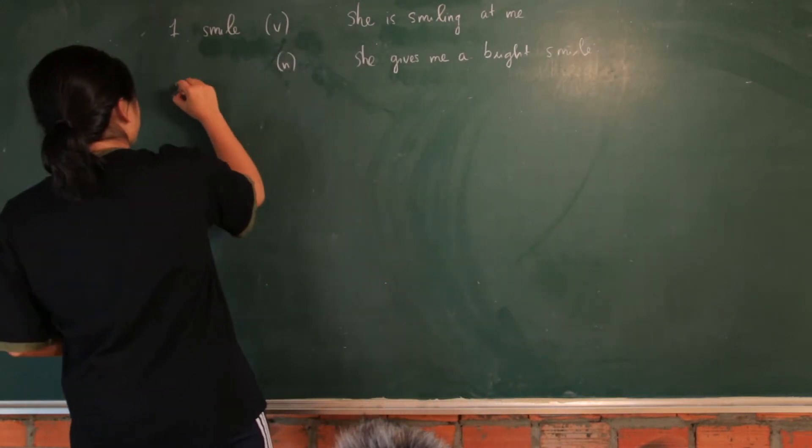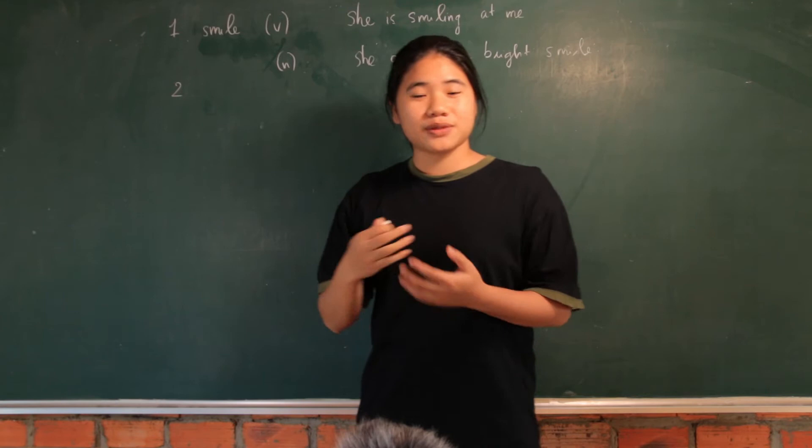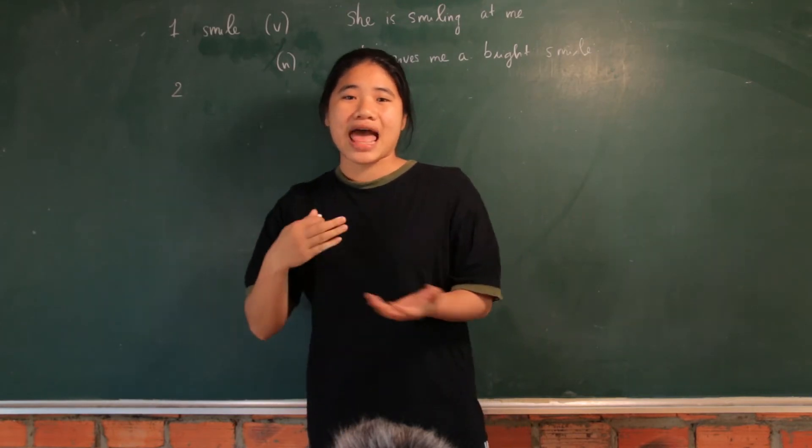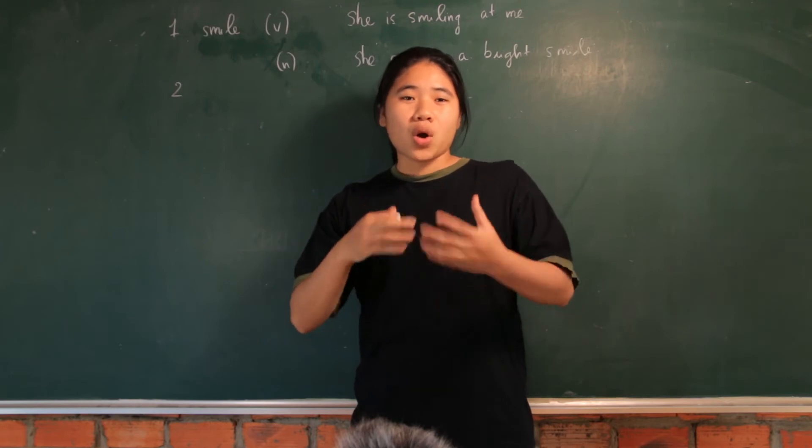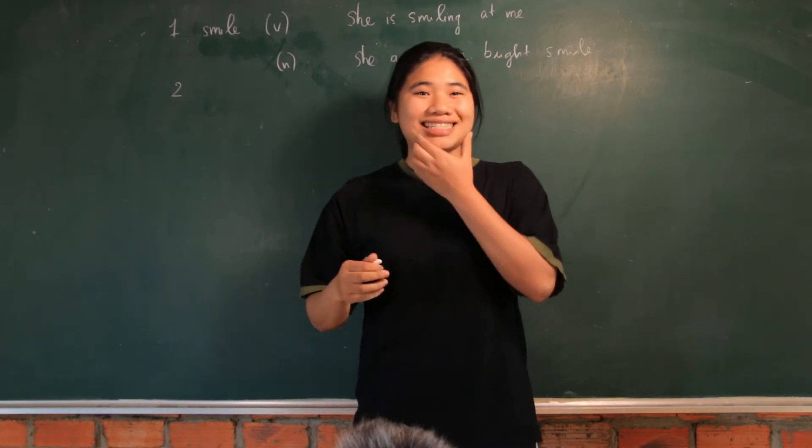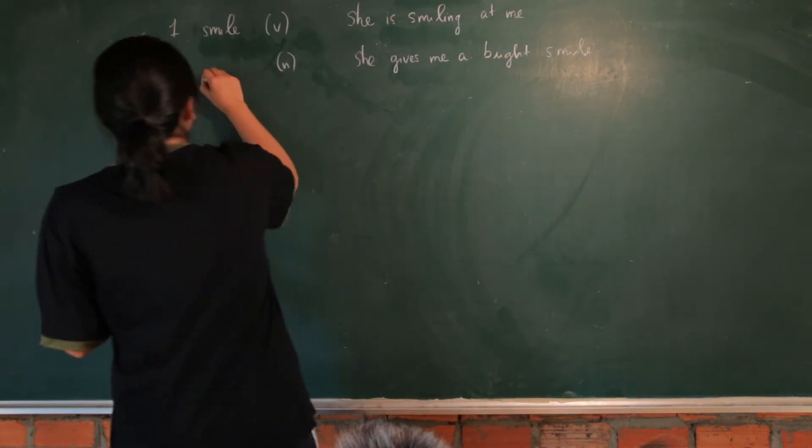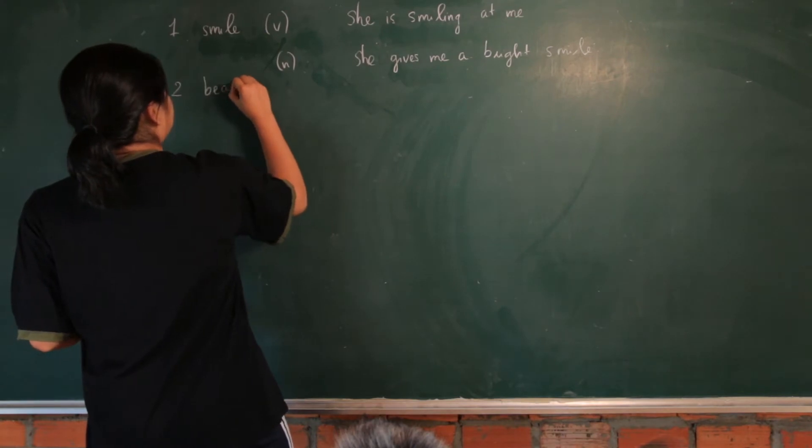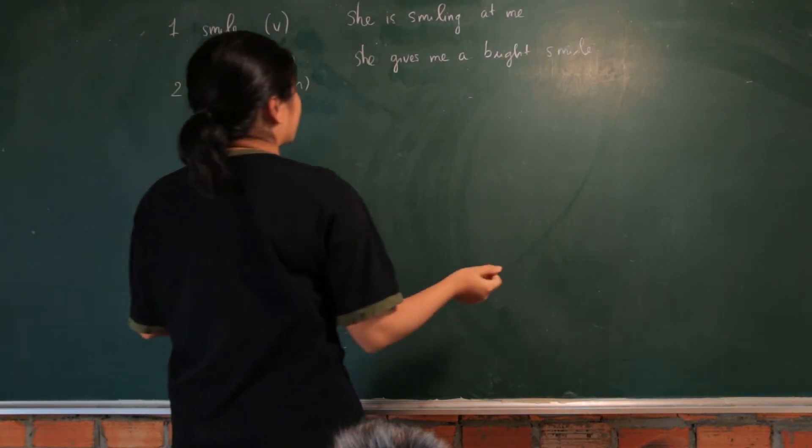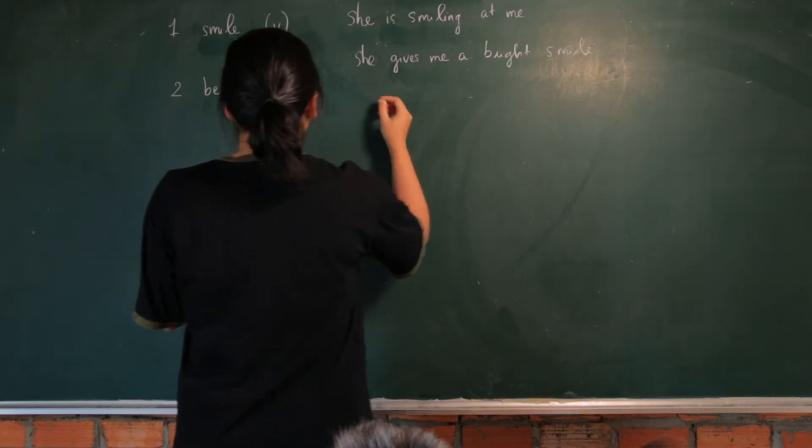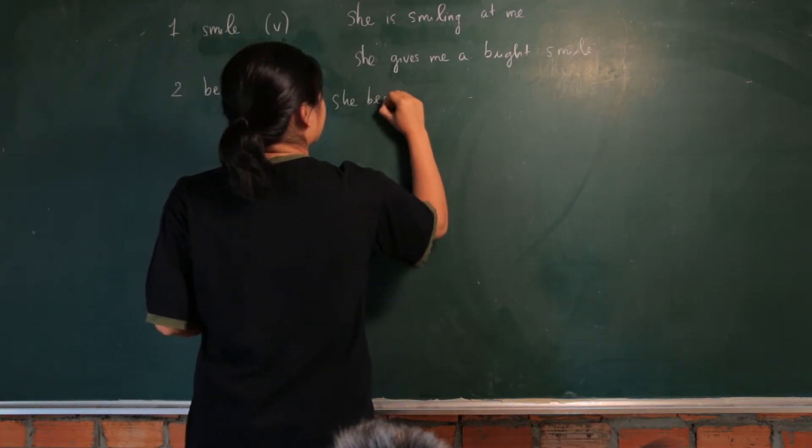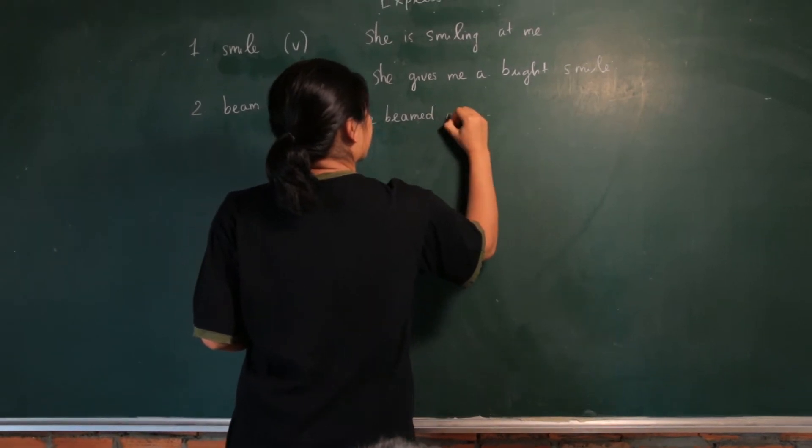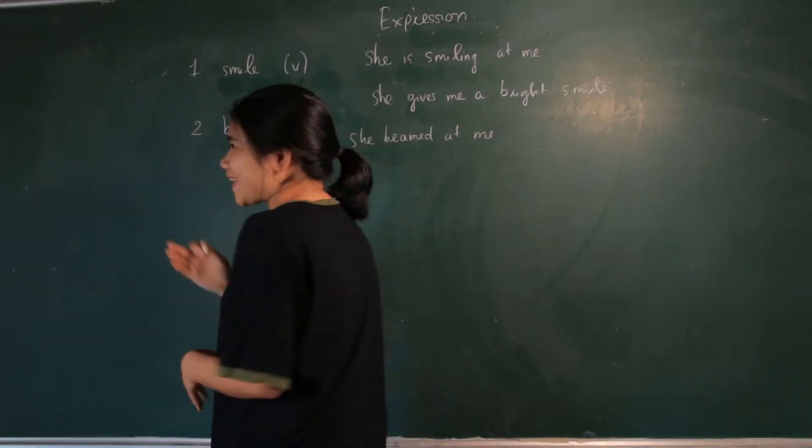And the second word is another kind of smile, but wider and happier, is beam. Beam is a wide and happy smile like this, and it's both verb and noun too. An example is like, she beamed at me.